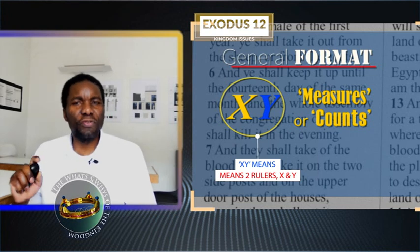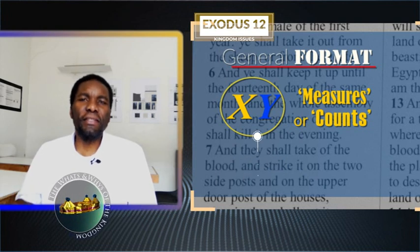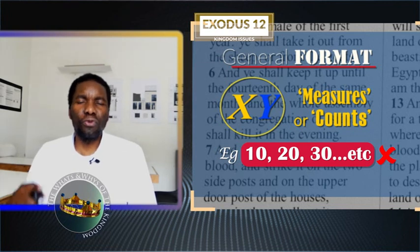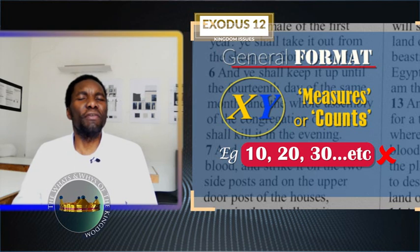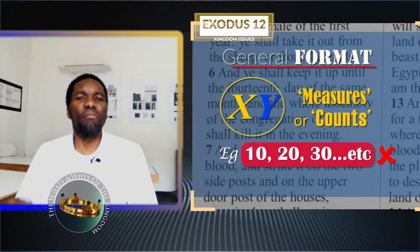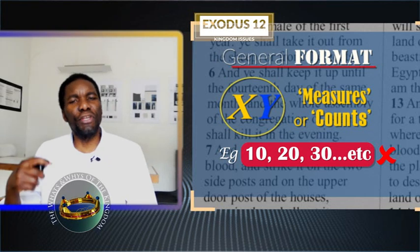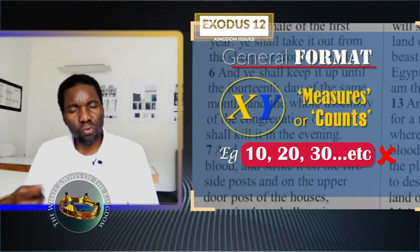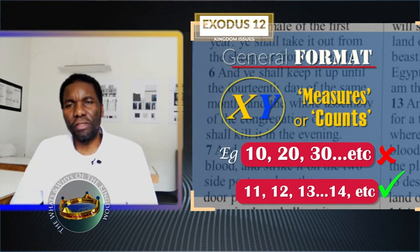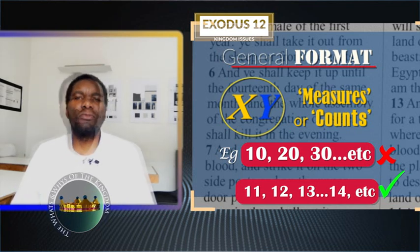Yet these double measures or counts mean rulers over rulers only when they are not direct multiples of 10. If they are not given as 11, 12, 13, but given as 10, 20, 30, then the 10s, 20s, 30s are not rulers over rulers. Even though these direct multiples of 10 signify rulers, they don't show rulers over rulers but rulers in terms of other elements. I hope you get the difference as we explain this figure of speech along the way.